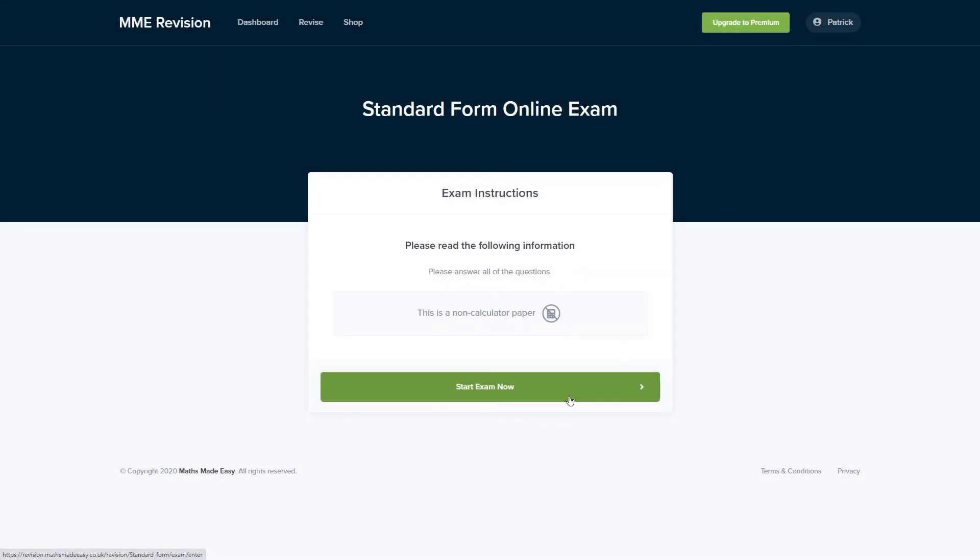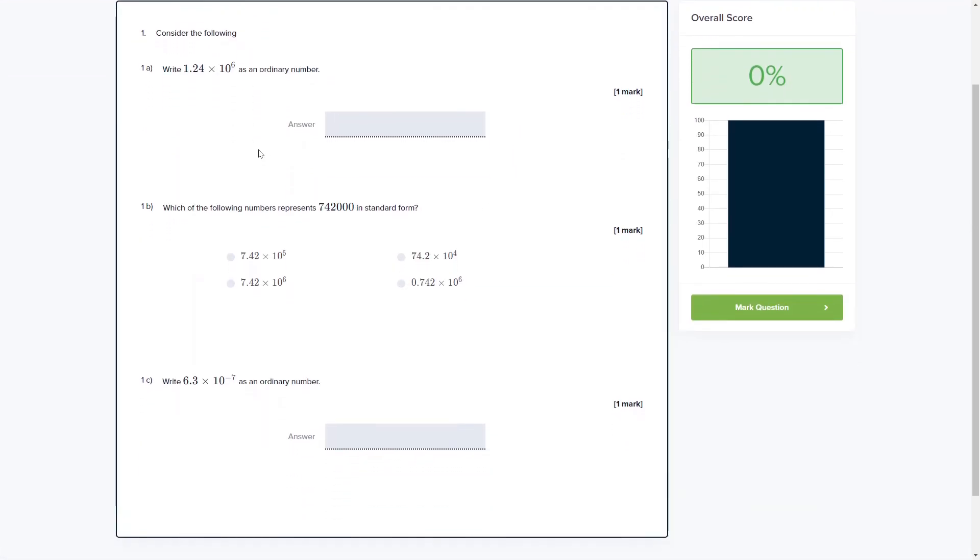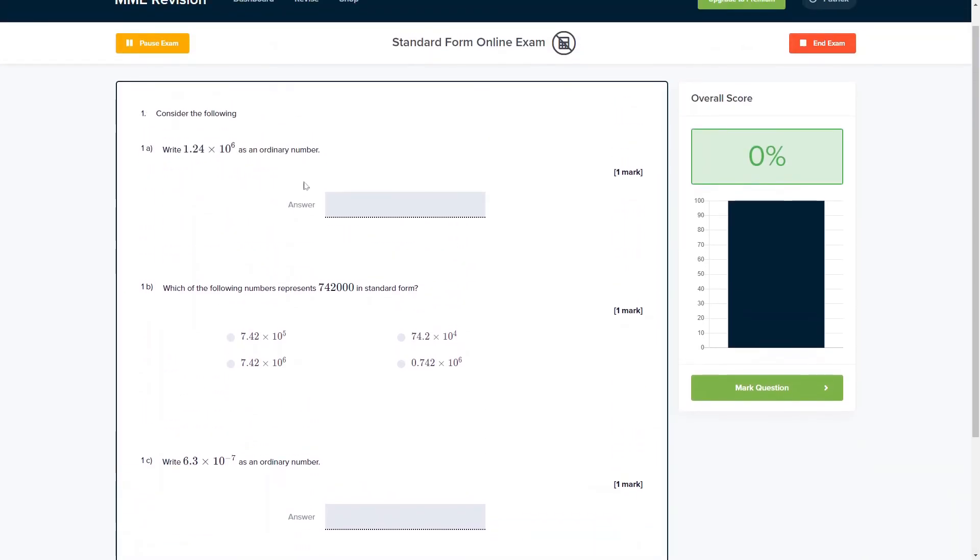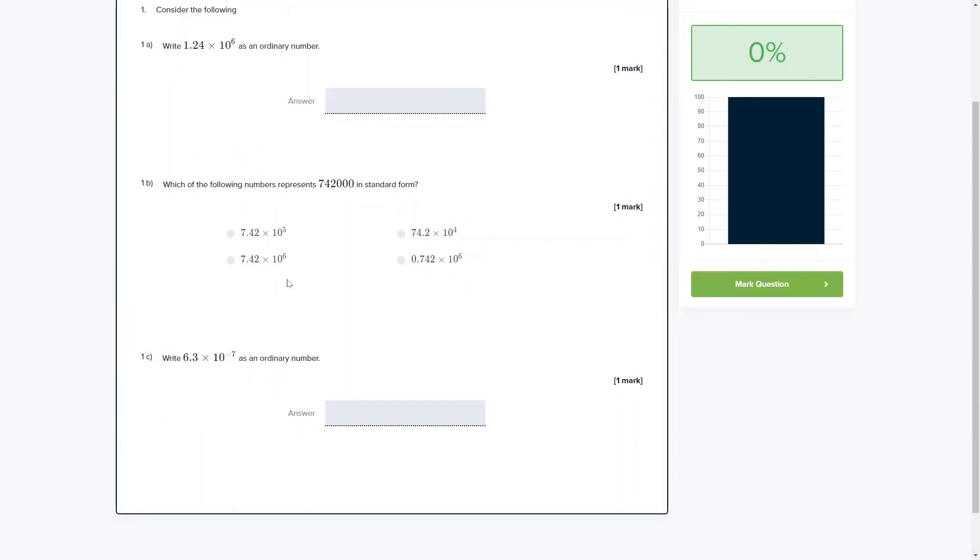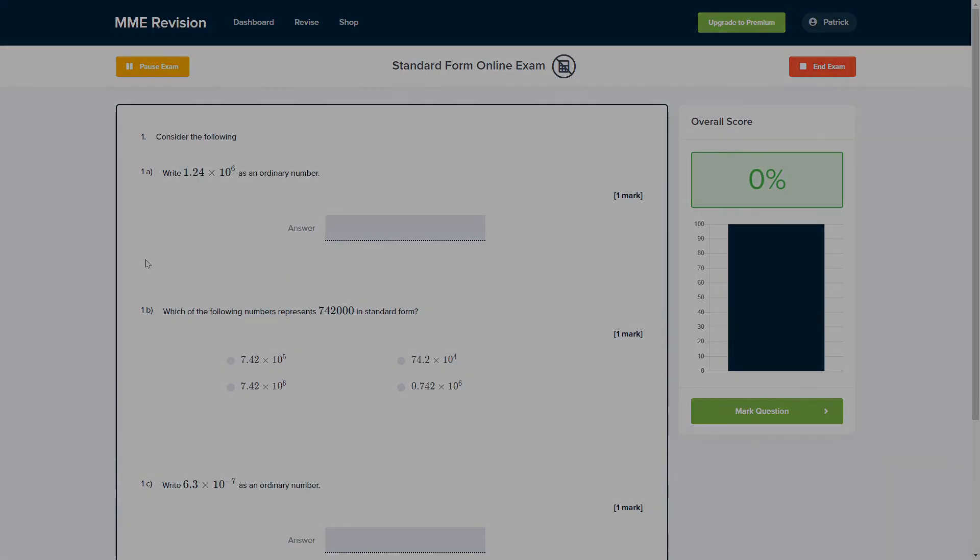Standard form is an important skill, so it's important that you get a lot of practice. You can do so with our online exam, which is available through our revision platform. If you take the test, you'll find loads of different questions with a variety of question types, and you'll get instant feedback on each one. It's a good way of keeping track of where you're going wrong, what your strengths and weaknesses are, and how you can improve. If this is something you're interested in, click the link below.